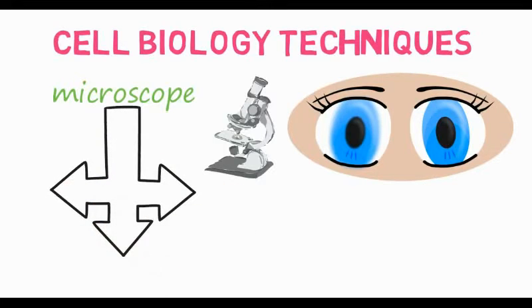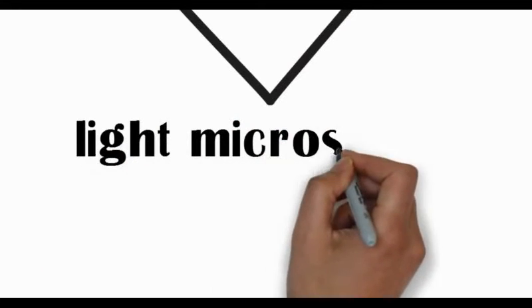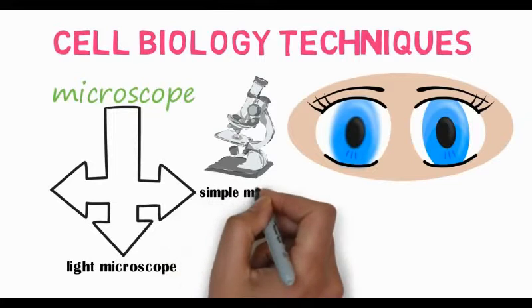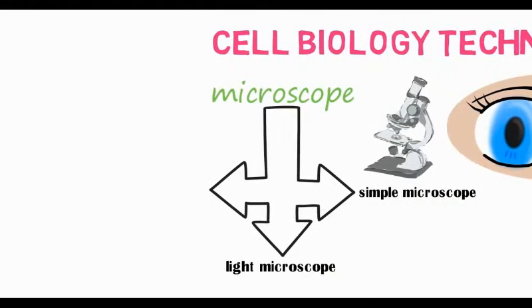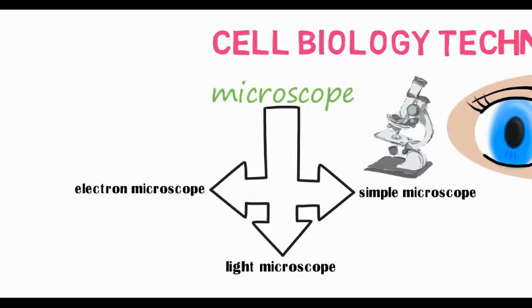The three types are light microscope, simple microscope, and electron microscope. Electron microscopes have two types: transmission electron microscope and scanning electron microscope.